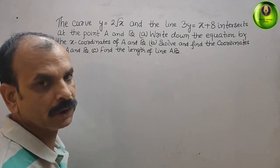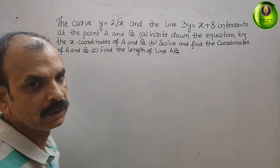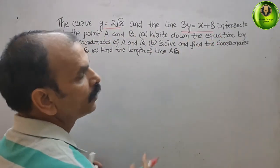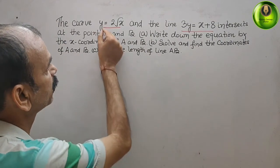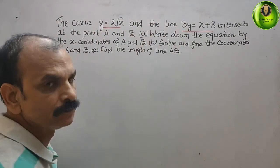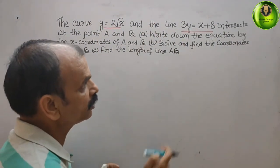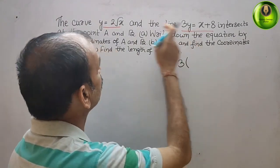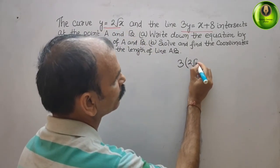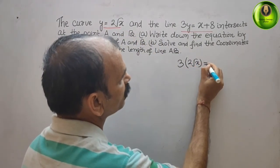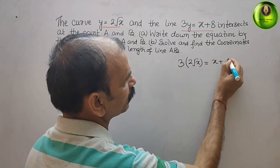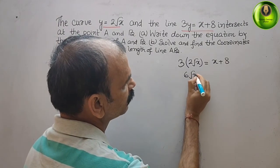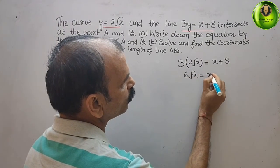We have two equations — the first is the curve and the second is the line. We will substitute y into the line equation. Since 3y equals 3 times 2 root x, we get 6 root x equal to x plus 8.